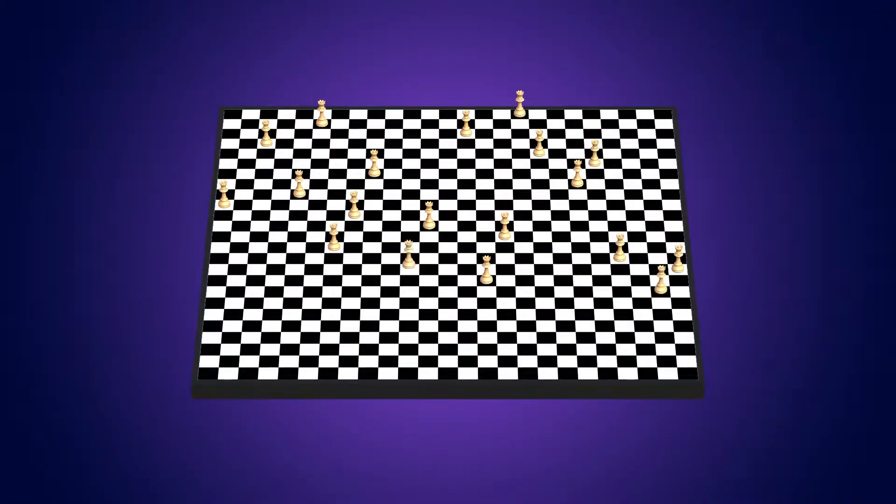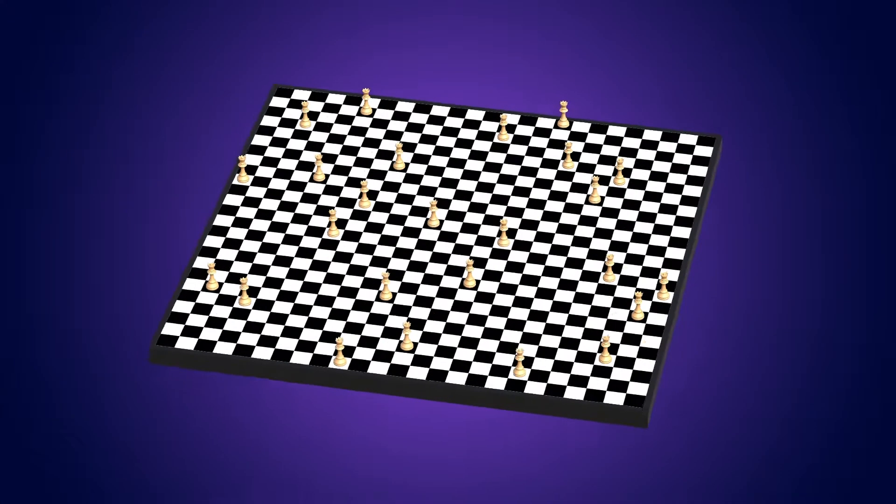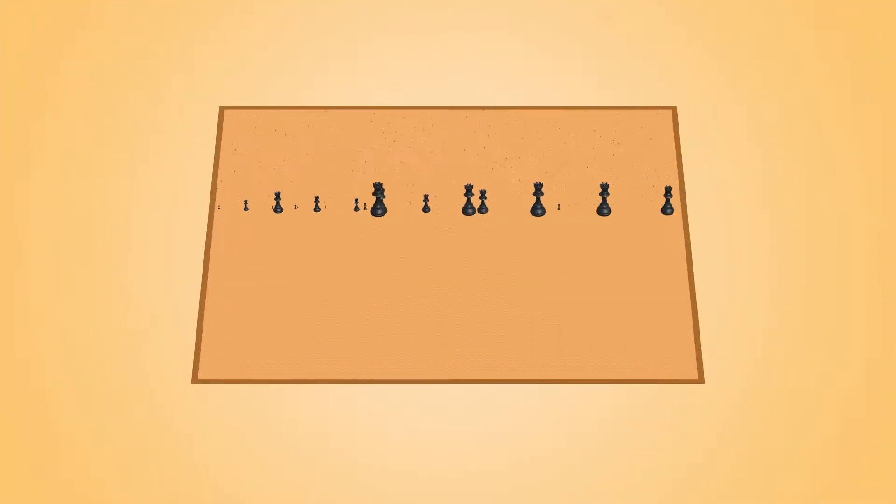For each improvement we make, we will solve larger instances of the problem with more queens. In the end, we will use a clever trick to make the algorithm even faster and find out how large an instance we can solve. Let's get started.